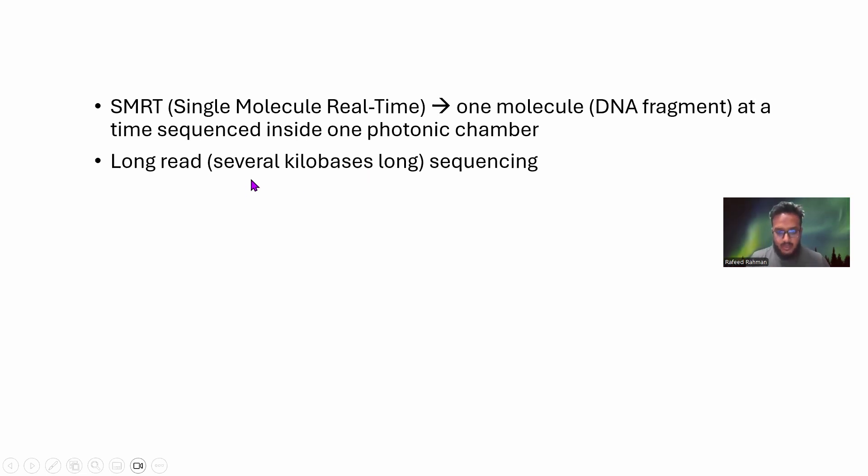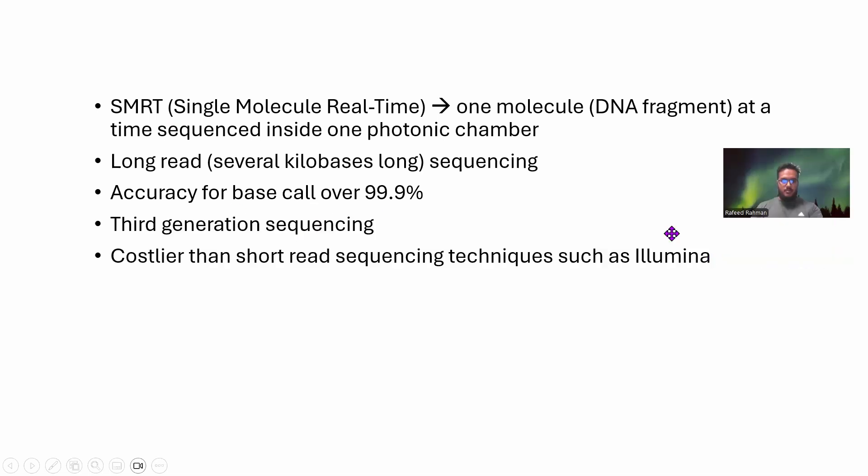Understand that Illumina is a very popular sequencing technique, but in that technique you cannot sequence more than 500 to 600 bases. So that is a very big differentiating factor. The fragments that are cut for Illumina need to be very small, but SMRT doesn't have that limitation. The accuracy is very high. This is one of the key points because there are other long read sequencing techniques, but their accuracy is not that high. It's third generation sequencing and very recent. The main problem is it's costlier than short read sequencing techniques such as Illumina. Obviously it's costly because you are doing long read and achieving very high quality base call.